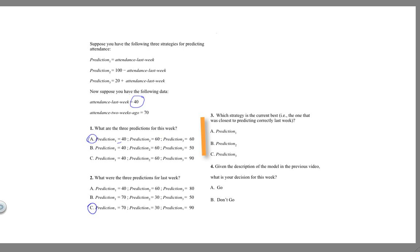Last week, the real answer was 40. And the closest prediction to 40, well, 30 is closer to 40 than 90 or 70. So prediction two gives us the best prediction.